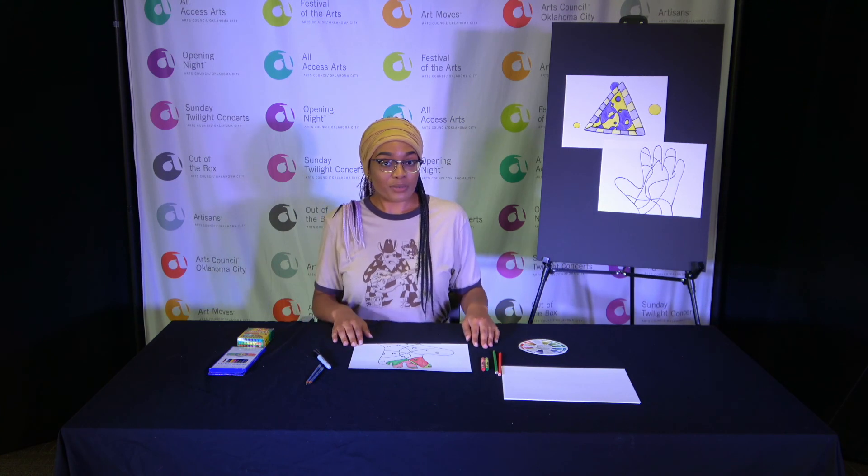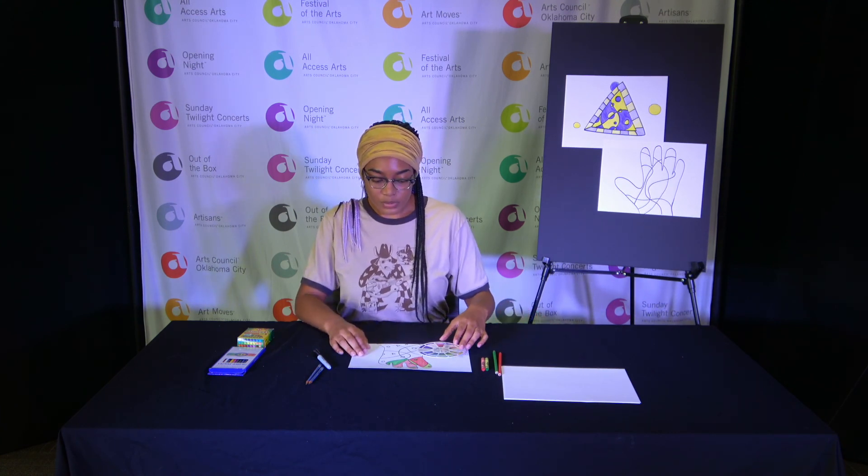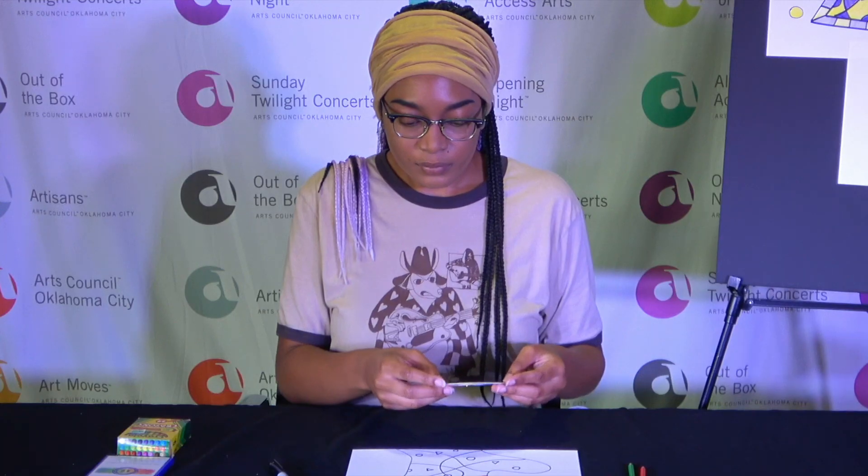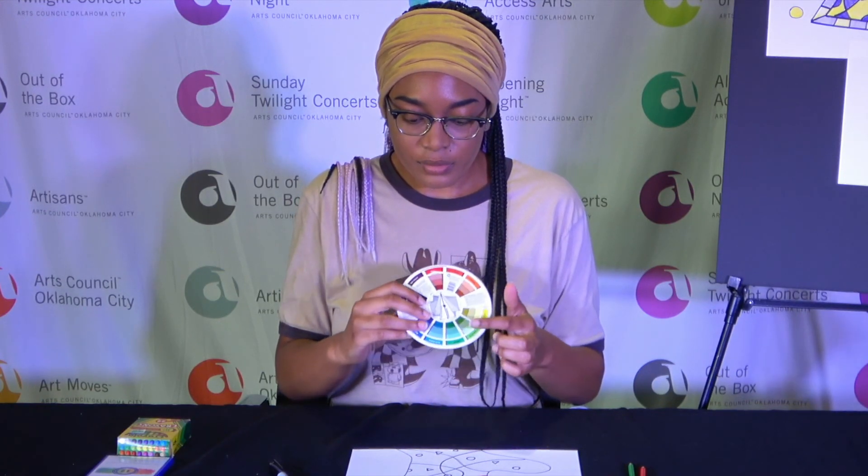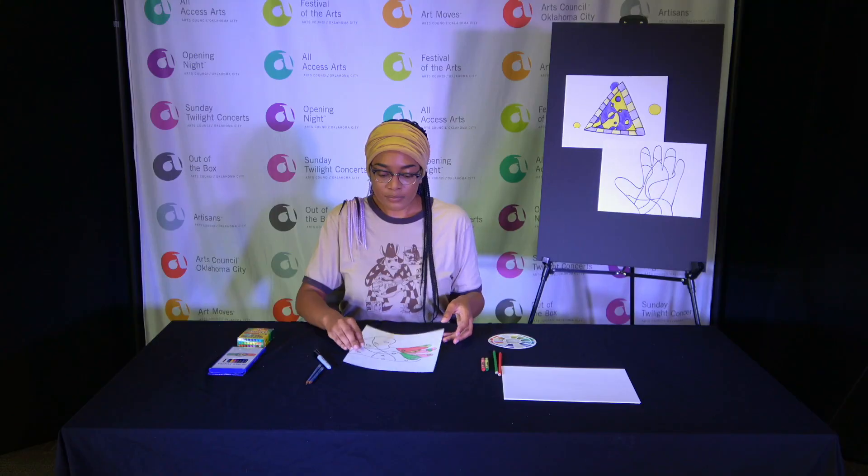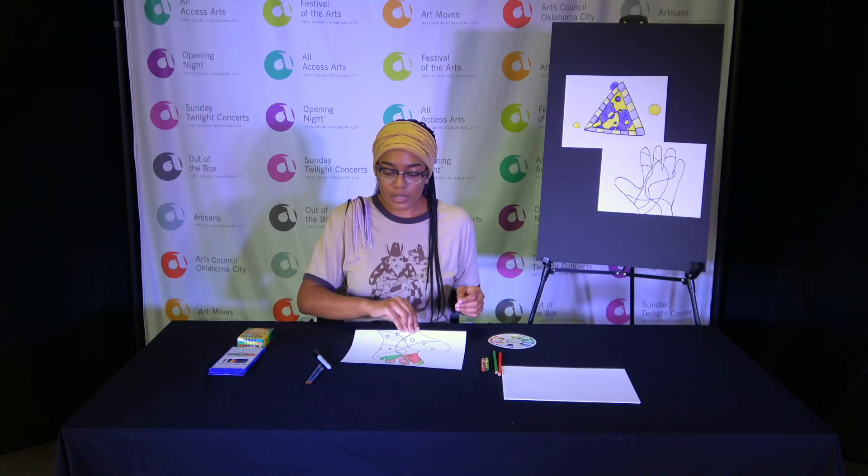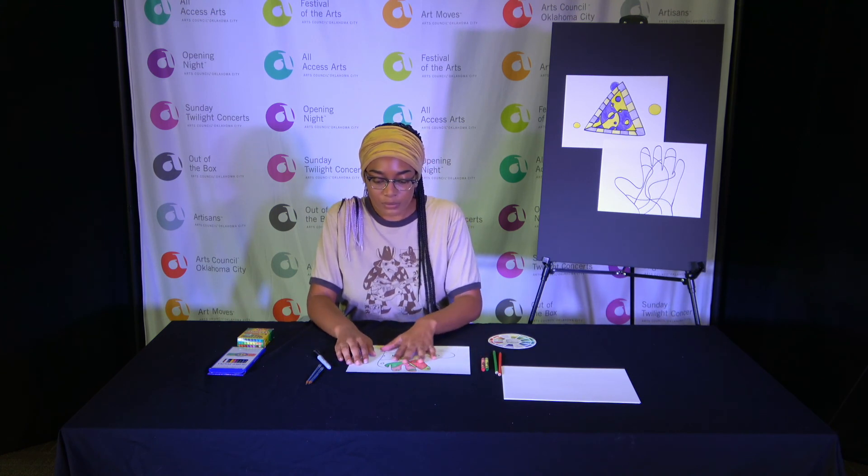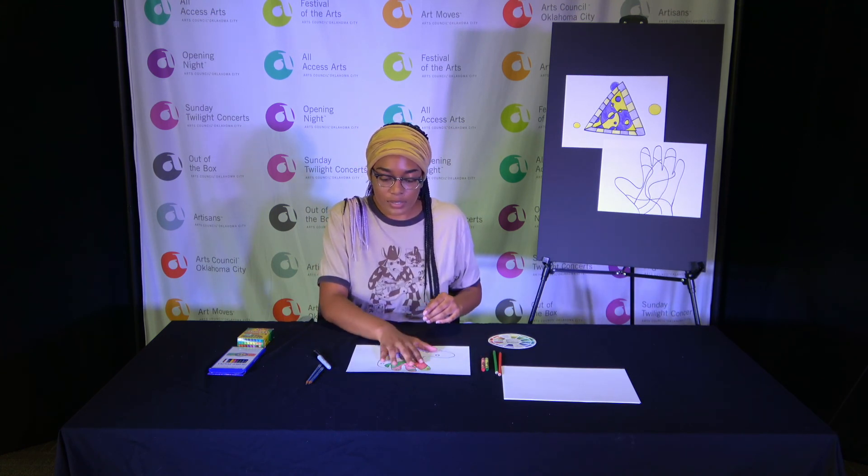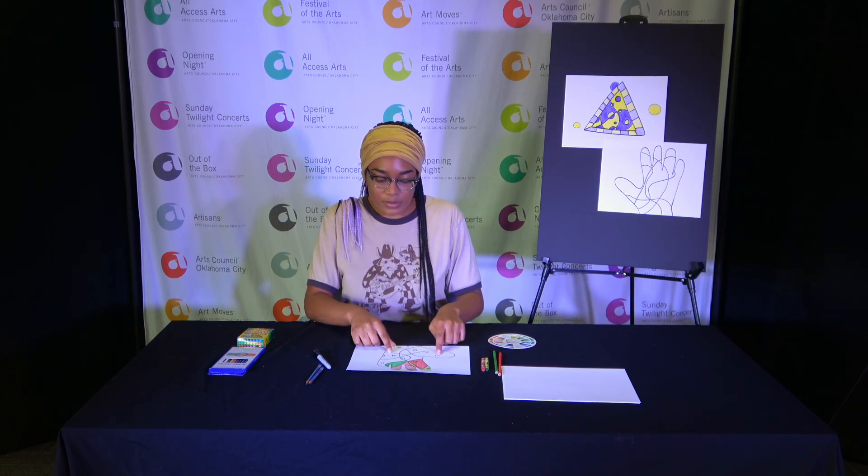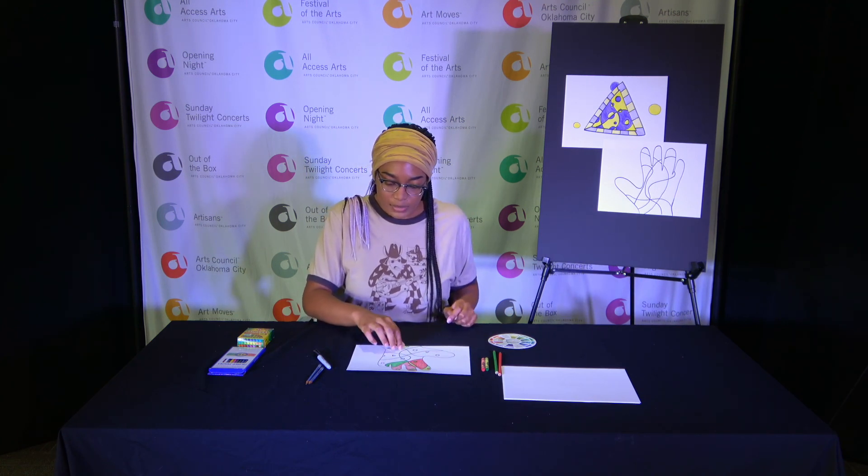So again, we learned about our complementary colors, which are colors that crop from each other on the color wheel, which those include green and red, which is what we use today, orange and blue, and violet and yellow. We also learned about pattern, which is again what we did today. We took our hand, we outlined it, we drew some lines in there, we made some shapes. We repeated things. And we also learned about detail, which are the smaller things that we did, like our lines and our circles and triangles.